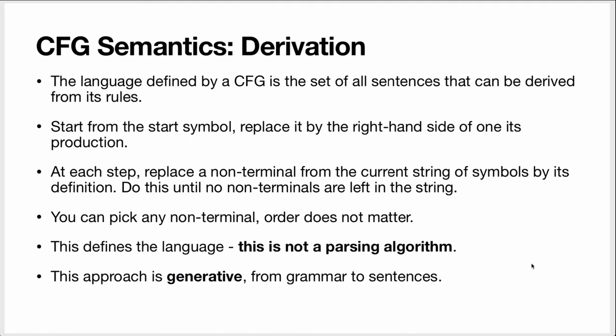The language defined by a context-free grammar is the set of all sentences that can be derived from the rules. In a derivation, we start from the start symbol and replace it by one of its right-hand sides, and we keep repeating this process. At each step, we have a string of symbols — terminals and non-terminals. We pick one non-terminal and replace it by one of its right-hand sides. We keep doing these replacements until we only have terminals left in the string. You can pick any non-terminal — order does not matter.